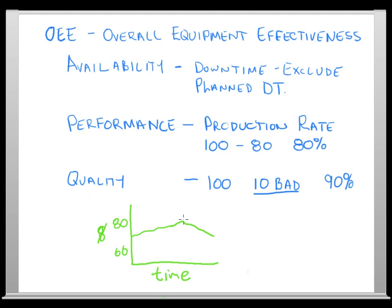Each line in a facility might have a different OEE — packaging versus processing, shipping — and you can look at them independently or combined. We don't want to say you're not hitting 100% so something's wrong; that's not how OEE should be used. It's a benchmark for your particular line, industry, or company. You're tracking the change and looking for improvement.